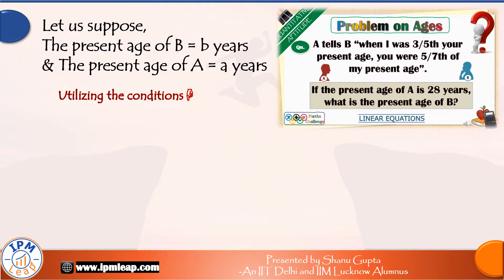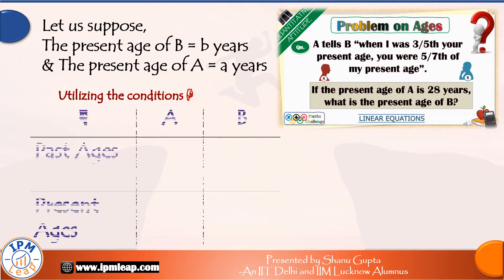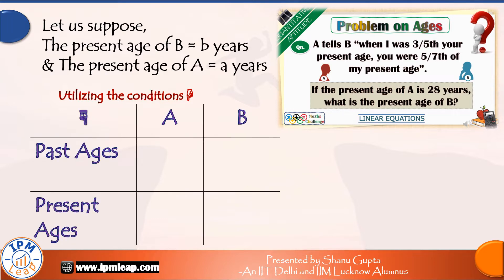Just keep in mind that A is given to be 28 as per the question statement. In each and every question on ages, there is one crucial thing that I always do. I always draw out a table like this and quickly jot down the past and present ages of the given persons. This practice ensures that I don't make a mistake at the time of forming equations. So, in this table, we jot down A's and B's present ages as A and B respectively.